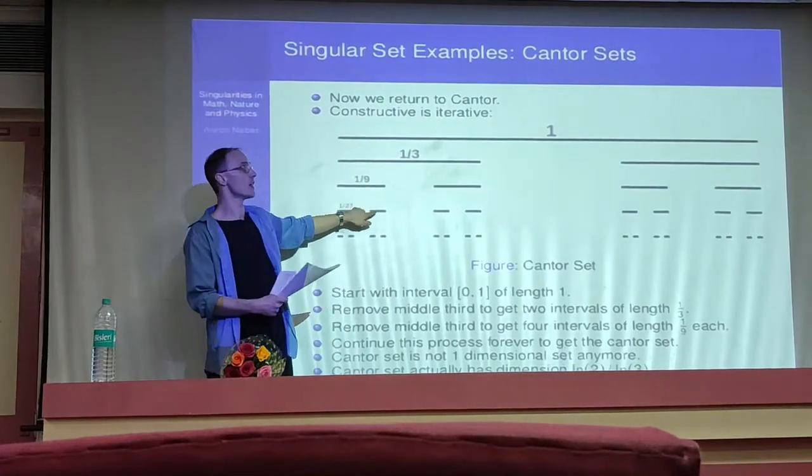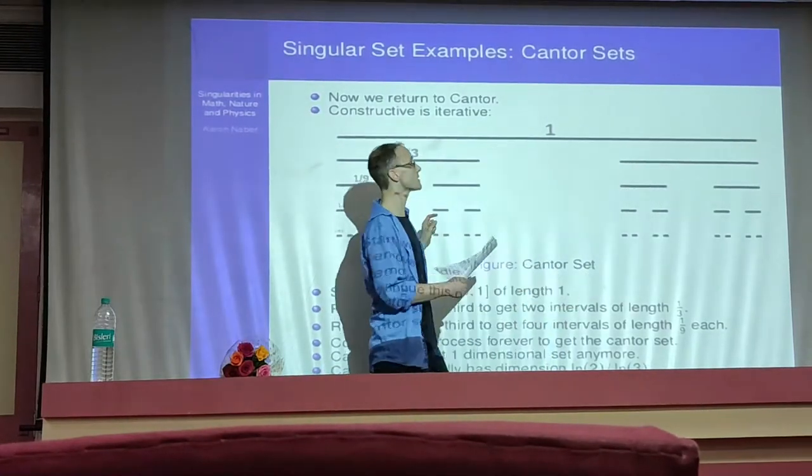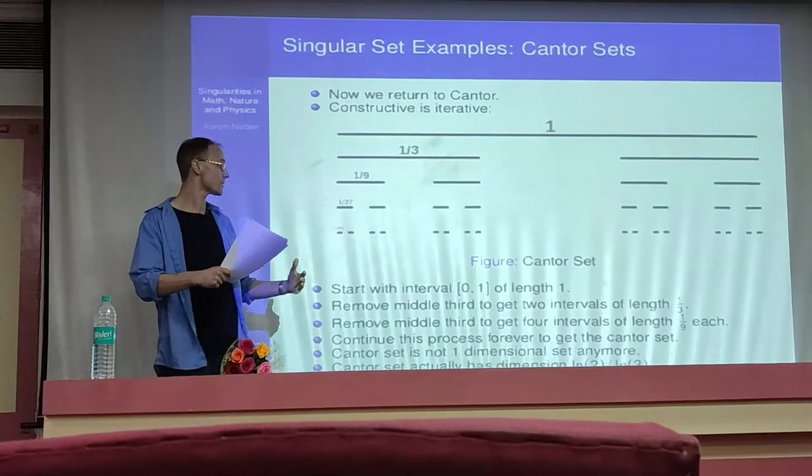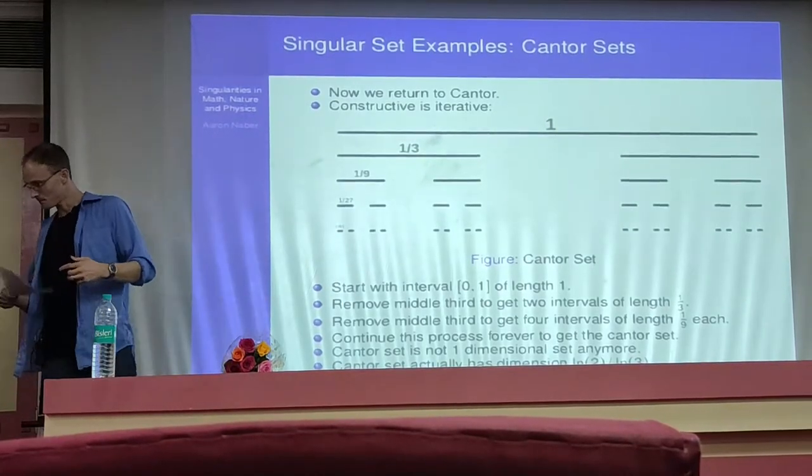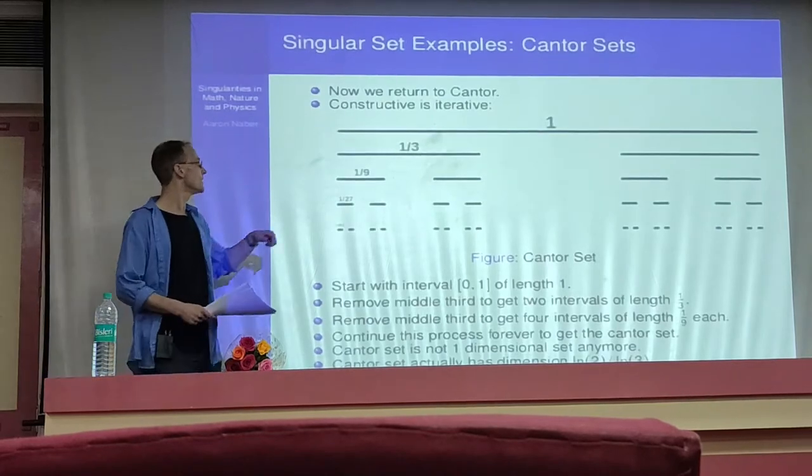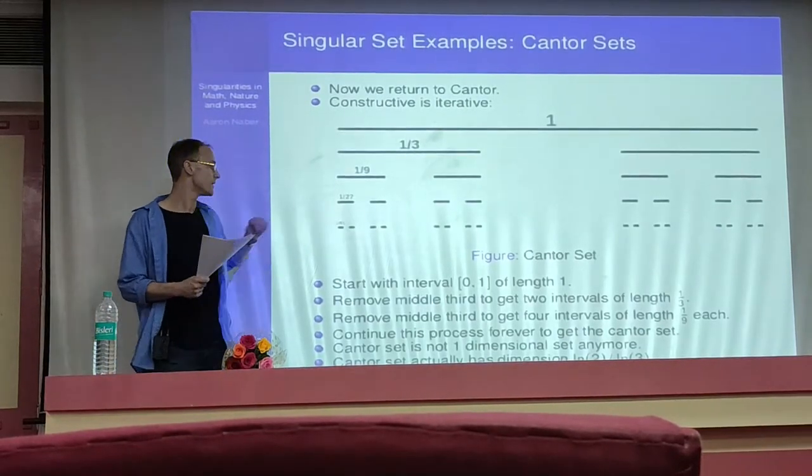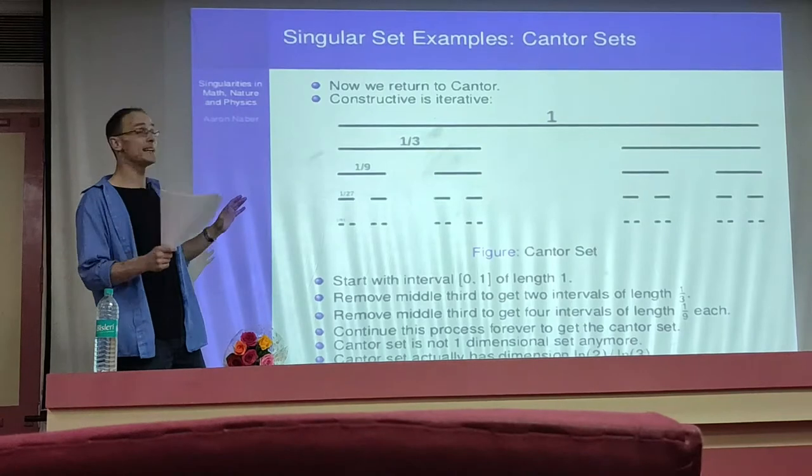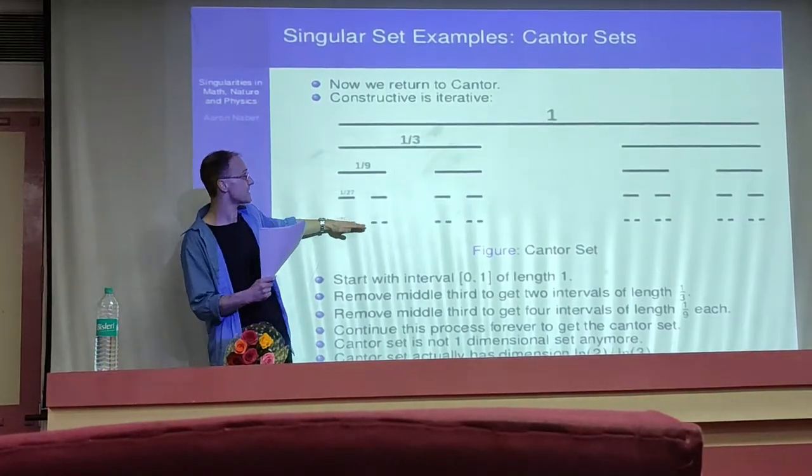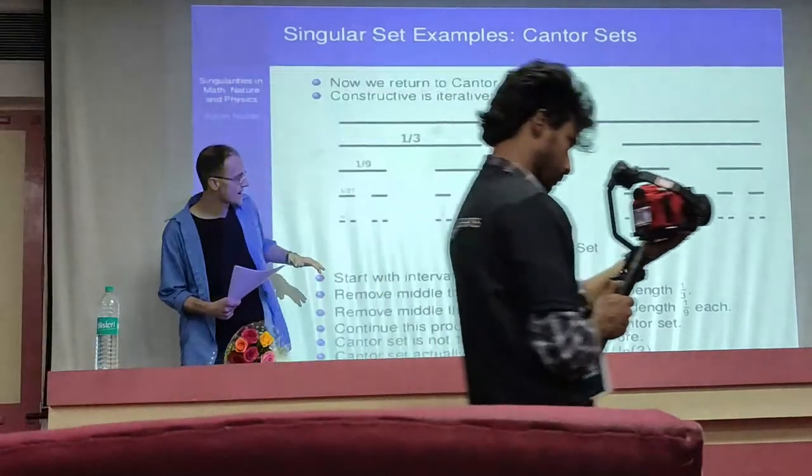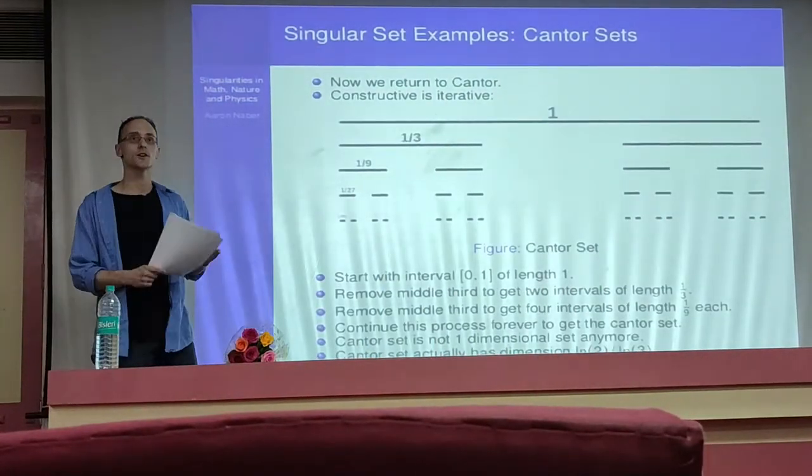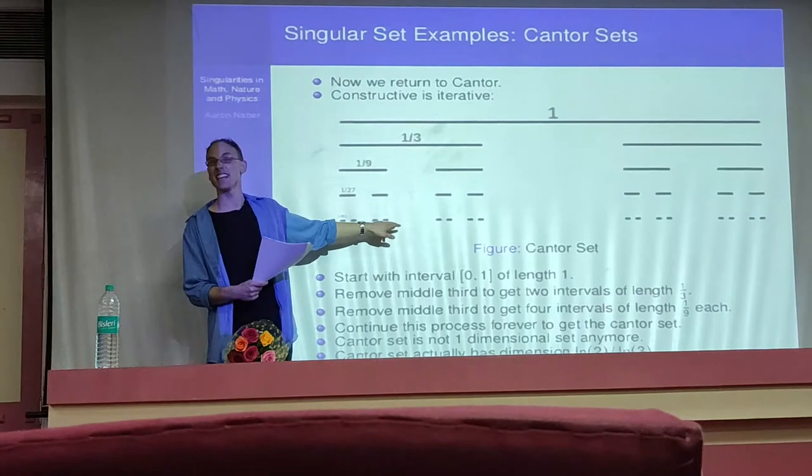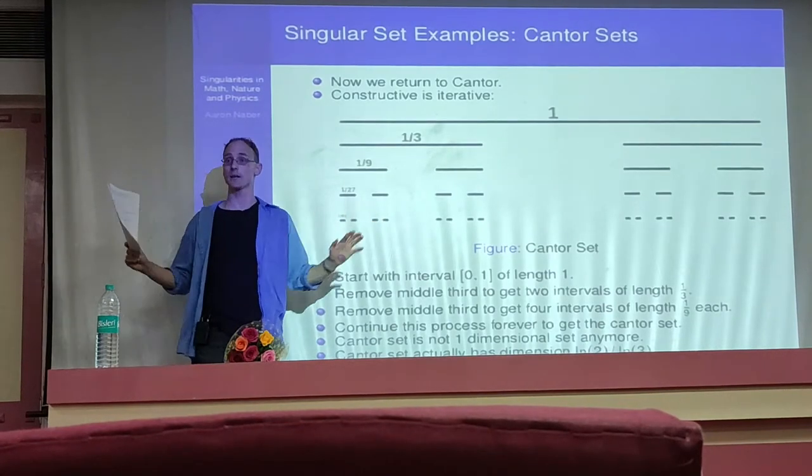You'll double the number of intervals you have and one third the length of all of them. Note these are all one-dimensional objects. But they're getting smaller and smaller as you keep doing this. In the limit here, what you get is a nice set which can't be one-dimensional anymore. But it is a set. It is some sub-collection. There is some collection of guys that survived this process in the end. It turns out they have some freaky dimension, log two over log three. This is the example of a Cantor set.